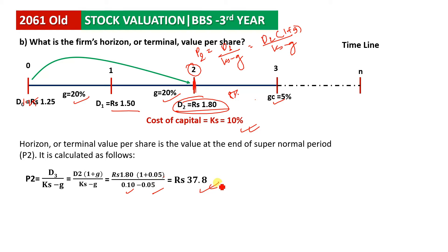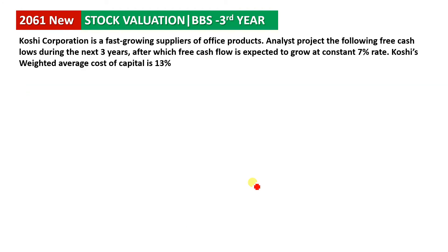The terminal value is equal to 37.8. If you are interested in the next question, we will see a new question. We will see that this is a fast-growing company, an office product. We will see a 3-day analysis of free cash flow, and whether it is up-and-down or constant.